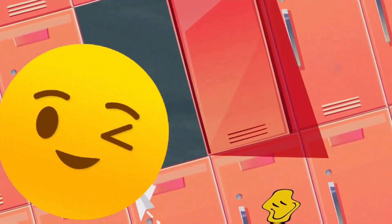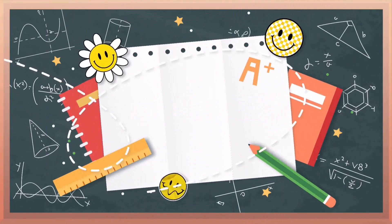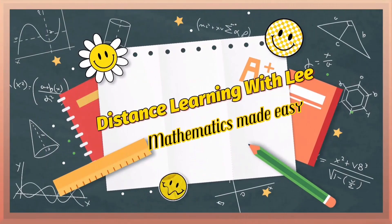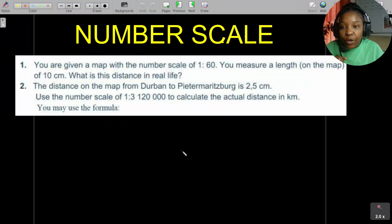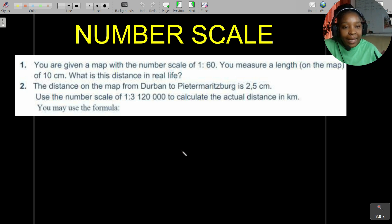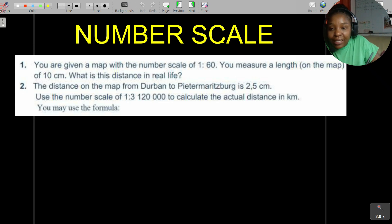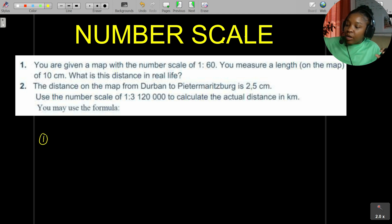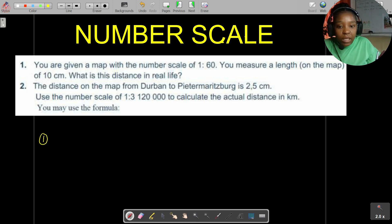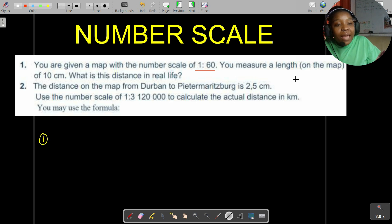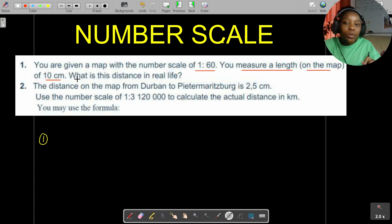Question one: you are given a map with the number scale 1 is to 60. You measure a length on the map of 10 centimeters. What is the distance in real life? I've mentioned that if you struggle to focus, highlight the important keywords. In this case, you're given the number scale and the measured length on the map as 10 centimeters, and you want to determine the distance in real life.